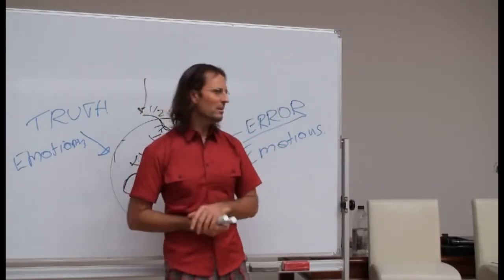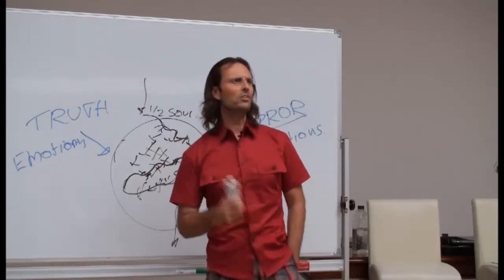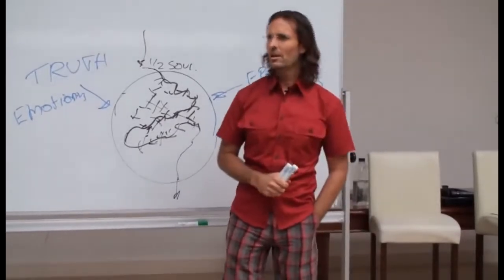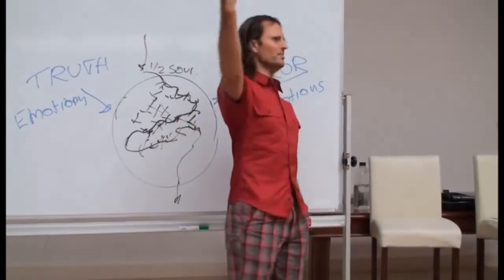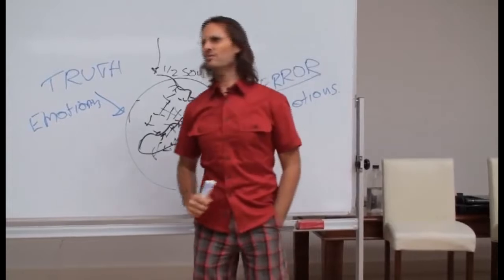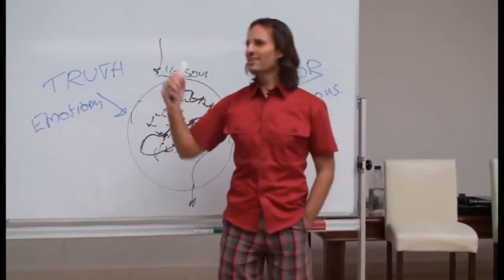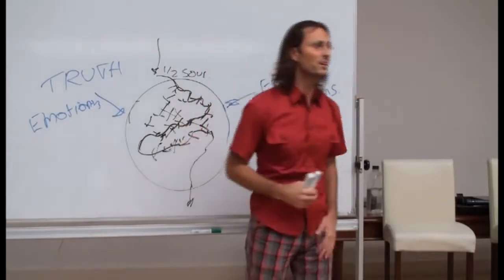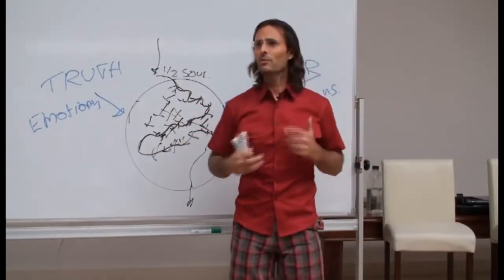But when somebody comes along like AJ comes along and he says, you know, there is never a justification for violence. I have this feeling rise in me. No, that's not true. What if I was raped? What if my child was being harmed? What if I... And I come up with all these scenarios, right? Inside of myself. Where are they coming from?